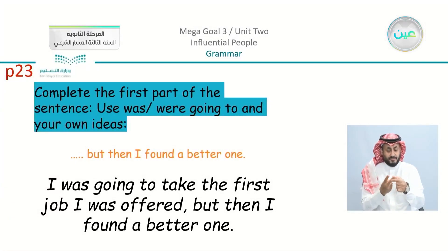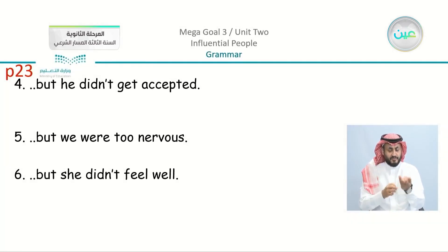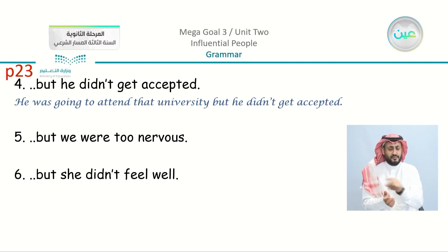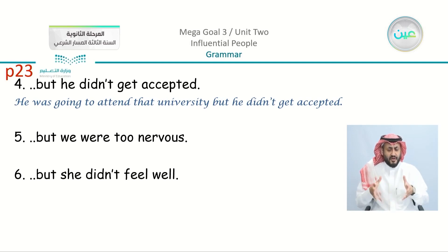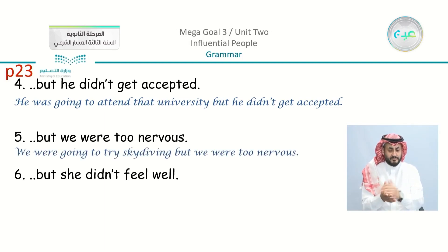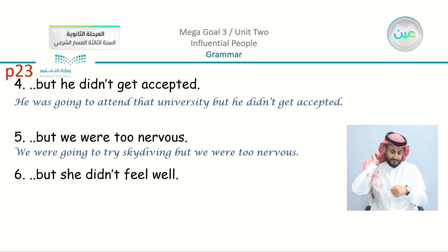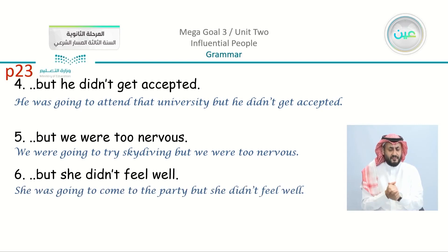We have the second exercise, which is to use was or were going to. We have also three sentences to complete. Just to remind you that this is the second part. We have: but he didn't get accepted. My example: He was going to attend that university, but he didn't get accepted. Number five: but we were too nervous. We were going to try skydiving — skydiving is something exciting and dangerous at the same time — but we were too nervous. Number six: but she didn't feel well. She was going to come to the party, but she didn't feel well. So this is our homework.